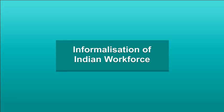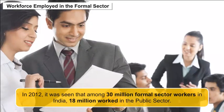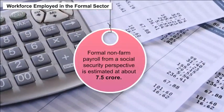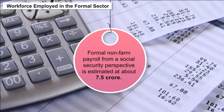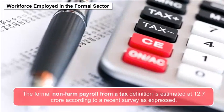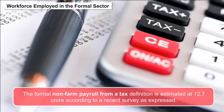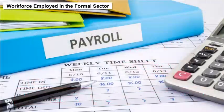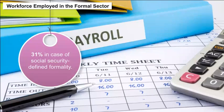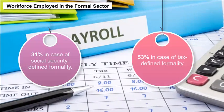Informalization of Indian Workforce: In 2012, among 30 million formal sector workers in India, 18 million worked in the public sector. Formal non-farm payroll from a social security perspective is estimated at about 7.5 crore, while from a tax definition it is estimated at 12.7 crore, according to a recent survey. These estimates for formal non-farm payroll range from 31% in the case of social security defined formality to 53% in the case of tax defined formality.